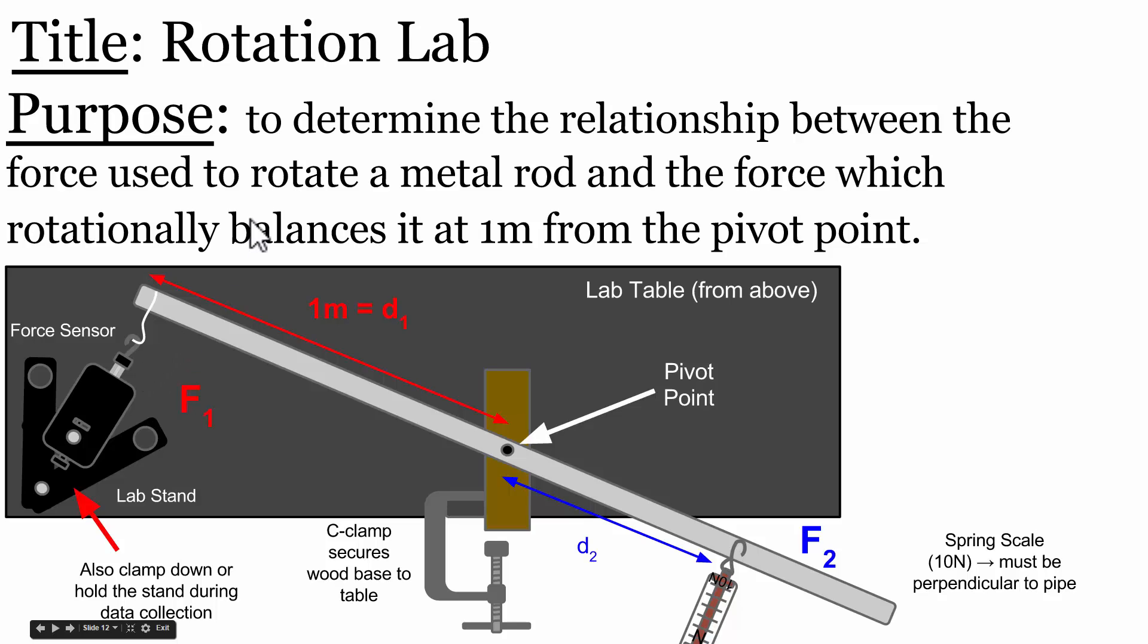Our purpose statement was to determine the relationship between the force used to rotate a metal rod, that's F2, and the force which rotationally balances it at exactly 1 meter from our pivot point.